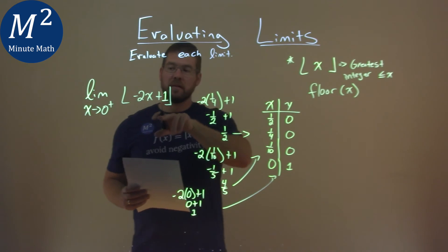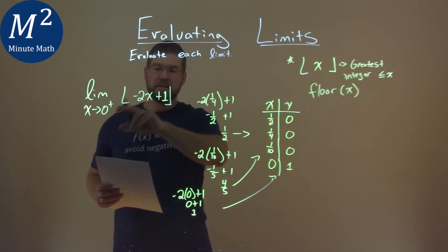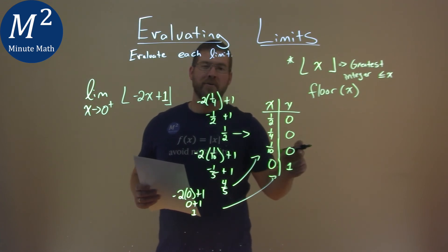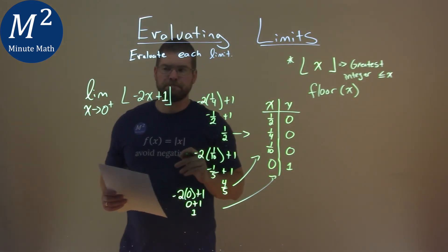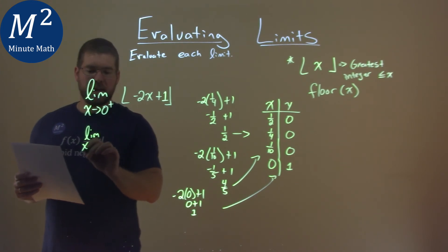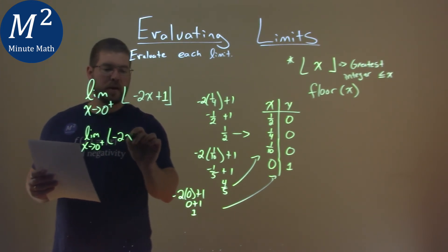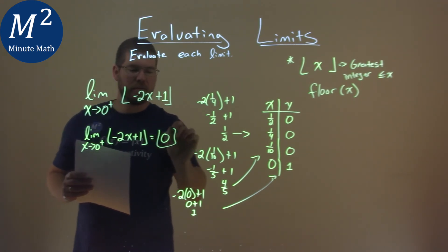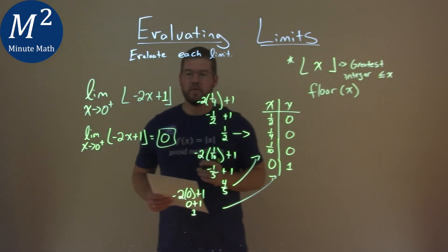So if we're approaching from the right here, all right, zero from the right, it's approaching a value, a y value of zero when we use the floor function. So this limit here, or I'll rewrite it, as x approaches zero from the right, the floor of negative two x plus one is equal to zero. That one's tricky, but it's our final answer.